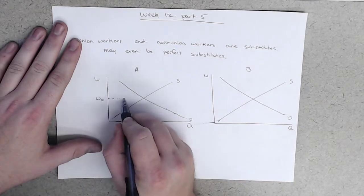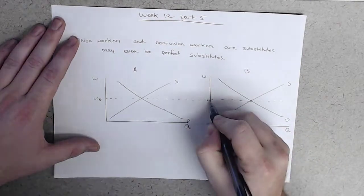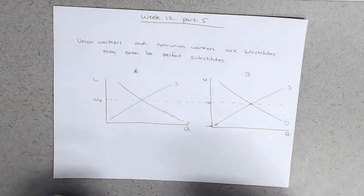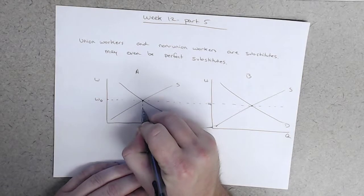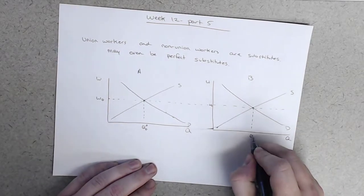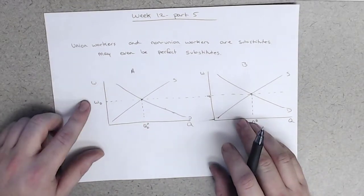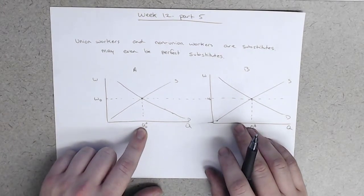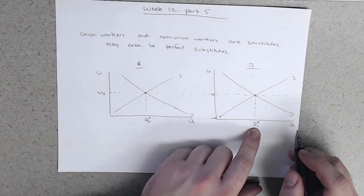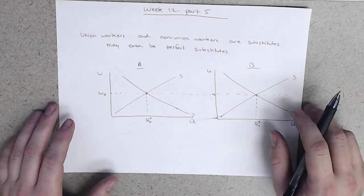And so what we should expect to see are the wages, the initial wages, we'll call them W-0, being equal across the industry. Everyone should be paid basically the same. If everything about these two labor markets is exactly the same, and it's costless to move between the two, everybody should be paid the same in both markets. And so we'll call this Q-0B, and this is Q-0A, which just indicates, you know, W-0 is the initial wage. This is the initial quantity of labor purchased and supplied in industry A, or in labor market A, and this is the initial quantity for industry or labor market B.